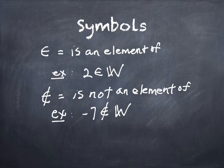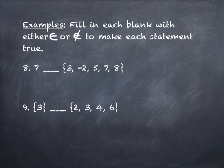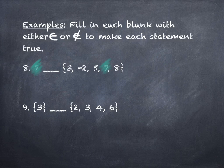We're going to fill in a couple of blanks with the correct symbol — either 'element of' or 'not an element of' — to make the statement true. Number eight: 7 blank {3, -2, 5, 7, 8}. What goes there? It is an element of, because we see the 7 on both sides — the 7 on the left is over here in the set on the right. So this is 'is an element of.'